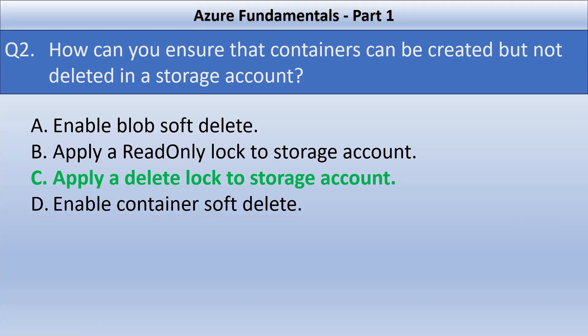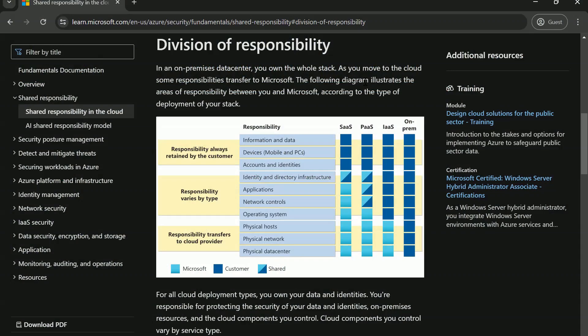We are going to look at a few questions related to the shared responsibility model, so let's understand it in more detail first. In an on-premise data center, you own the whole stack. As you move to cloud, some responsibilities transfer to Microsoft in the case of Azure, to Amazon in the case of AWS, or to Google in the case of GCP.